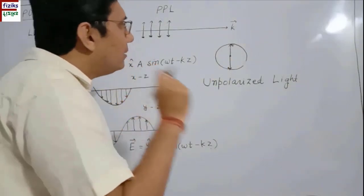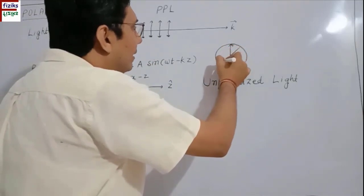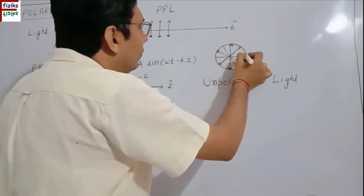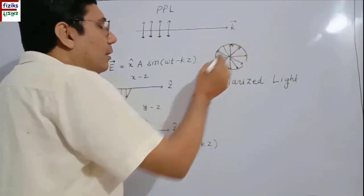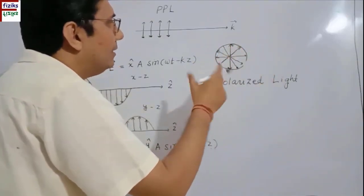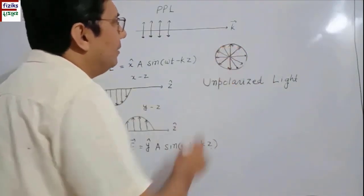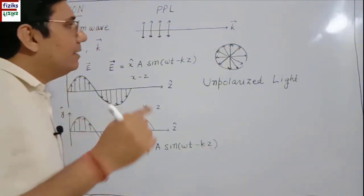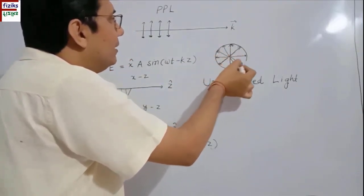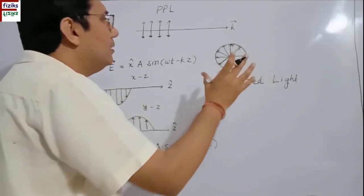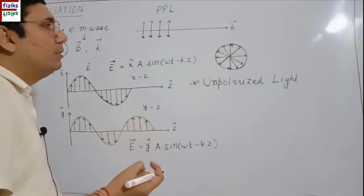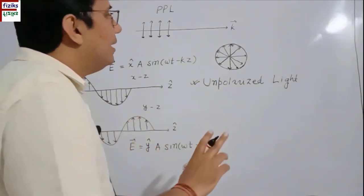Suppose there are a large number of waves whose electric vectors are in all random directions, and all these waves are propagating in the same direction — inwardly into the board. So basically, if instead of one electric vector direction, we have a large number of waves whose electric vectors are in quite different directions but they are propagating in the same direction, meaning their K vector is the same, but they are superimposed such that their electric vectors are in different directions — then the superposition of these large number of waves will form unpolarized light.